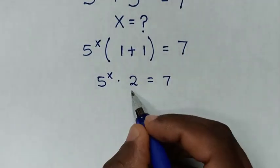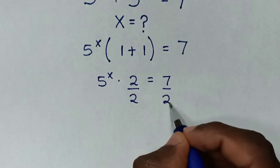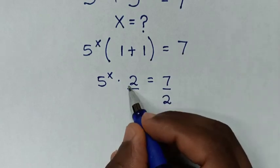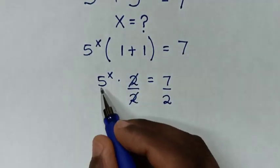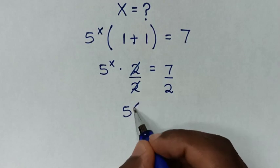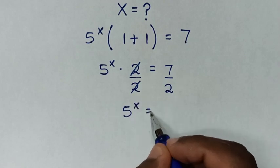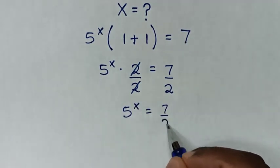Then in the next step, we divide by 2 on both sides, so this and this will cancel, and it will be 5 power of x is equal to 7 over 2.